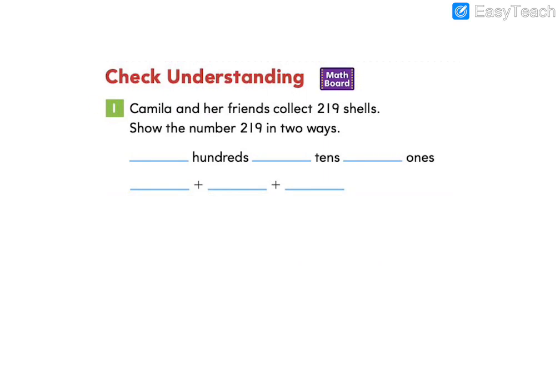Now let's complete the check understanding. Camila and her friends collect 219 shells. Show the number 219 in two ways. If you want to draw a picture, you can use this area over here. Go ahead and complete the check understanding. Pause the video if you need any more time. I'm going to show my picture over here with my 200, my 10, and my 9 ones. So in expanded form, that looks like 200 plus 10 plus 9.